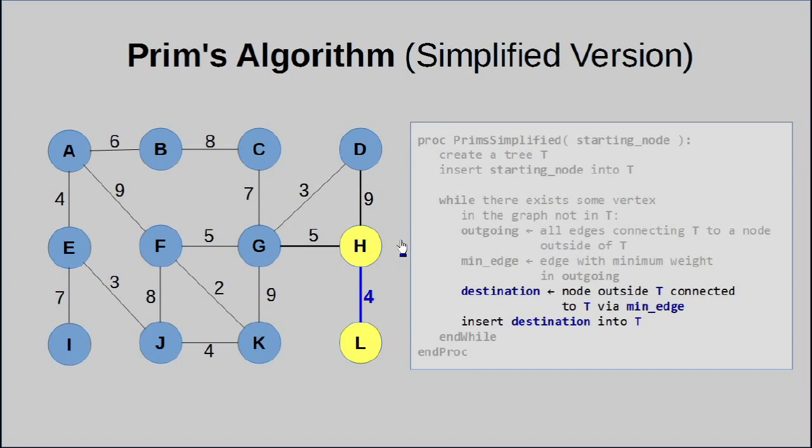With that done, we simply loop back and continue doing this until our tree grows and covers the entire graph. So once again, we look at all the edges outgoing from our tree, in this case just these two edges. We pick 5, expanding the tree to node G. Once again, we look at all the nodes outgoing, and now the smallest one is 3, so we pick it. That leads us to D. So on and so forth.